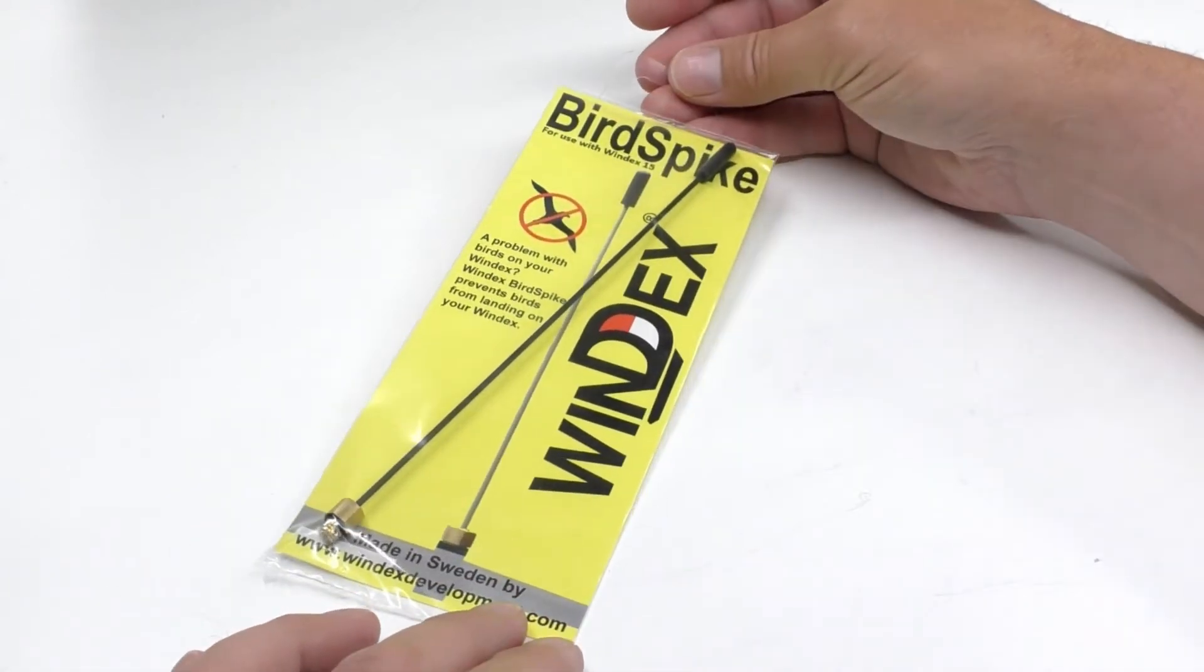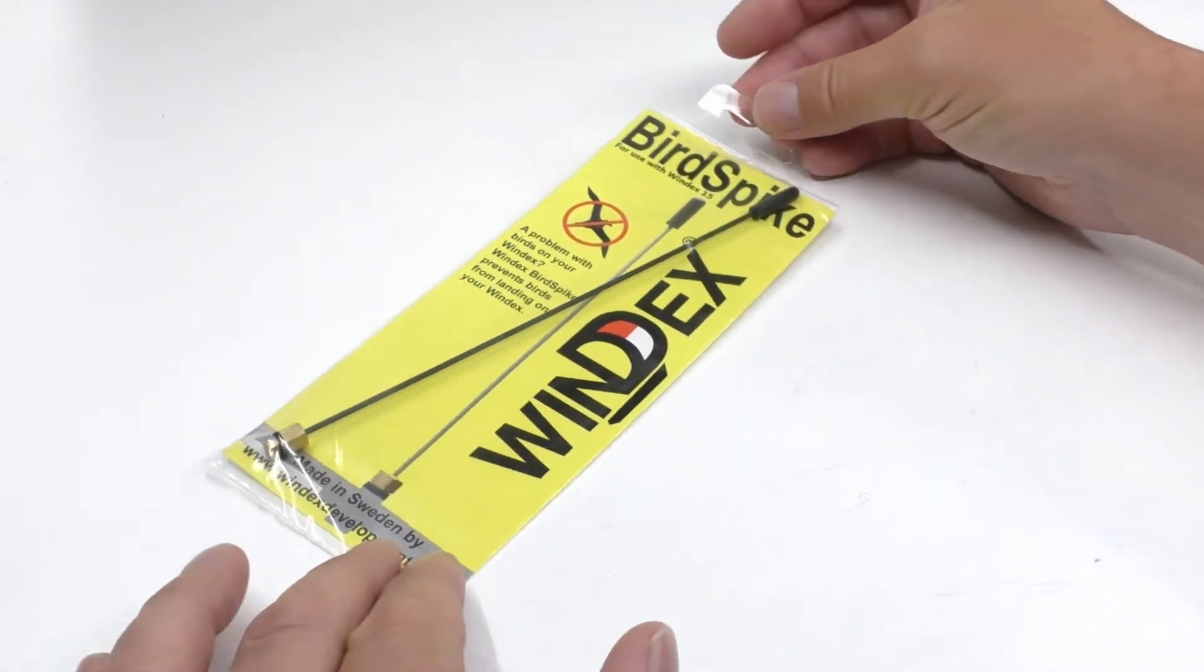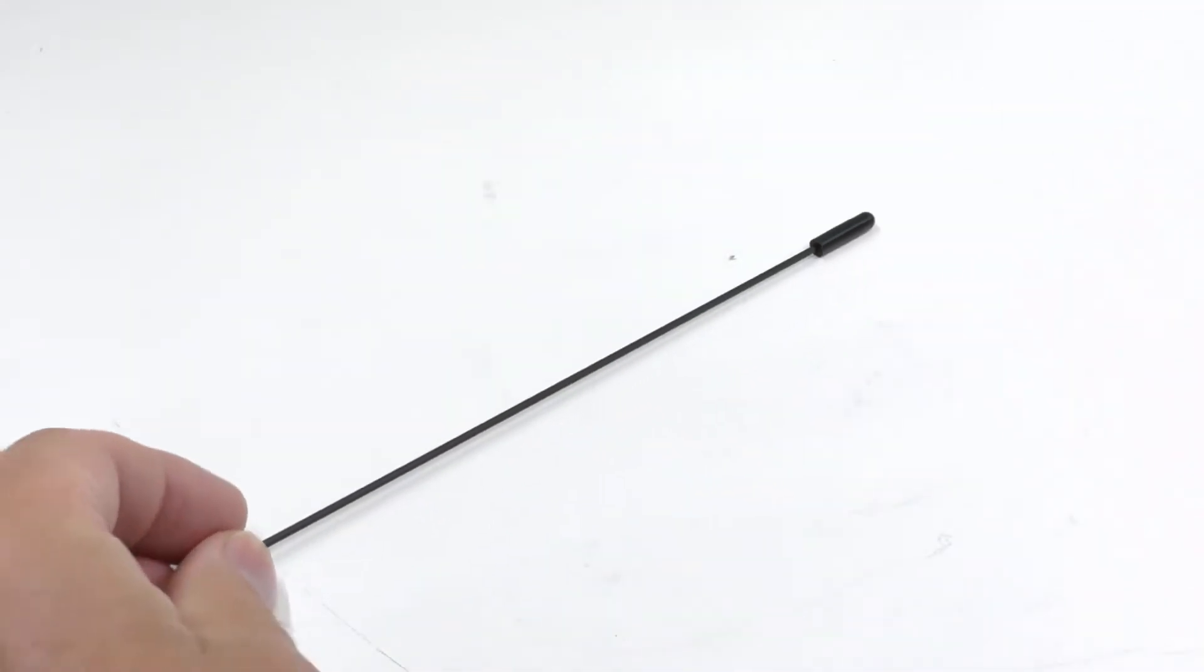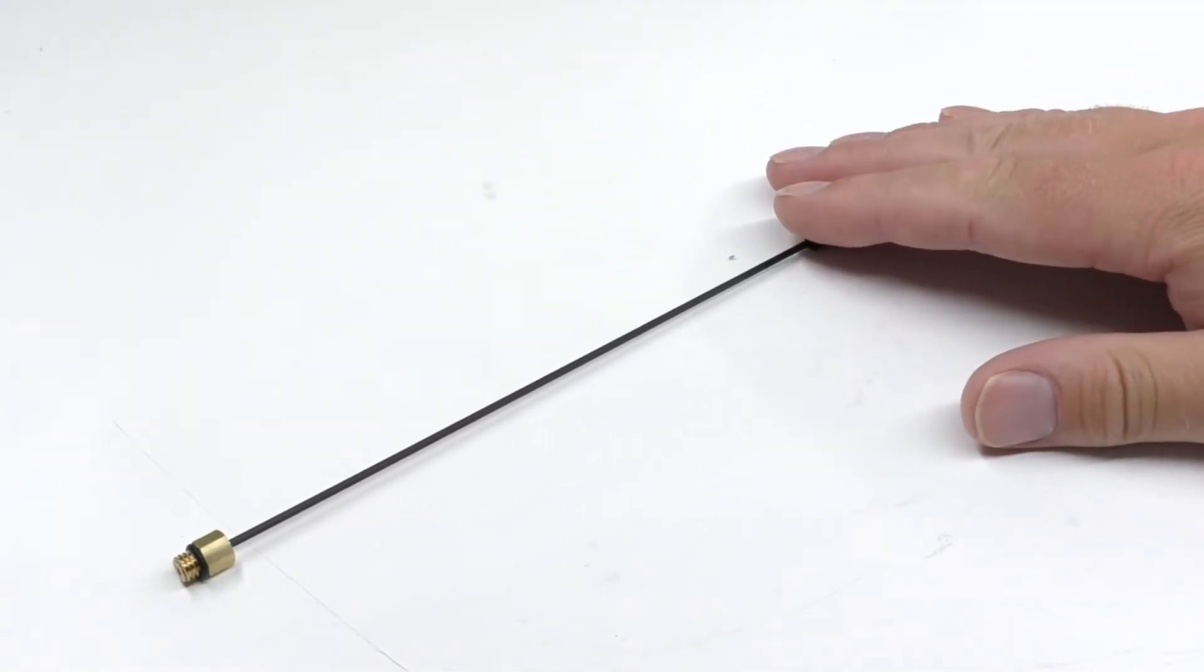Hi, we will in this video assemble a bird spike to Windex 15. The bird spike is made from carbon fiber and prevents birds from landing on your Windex.